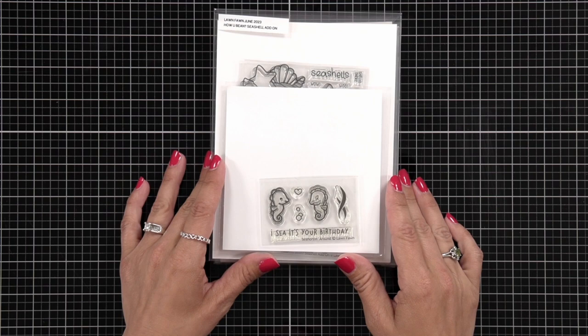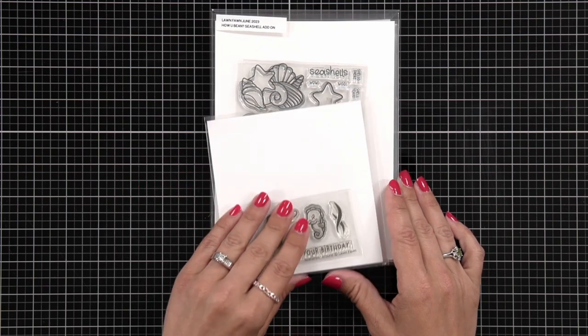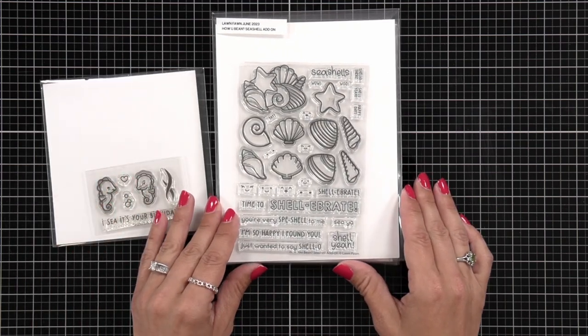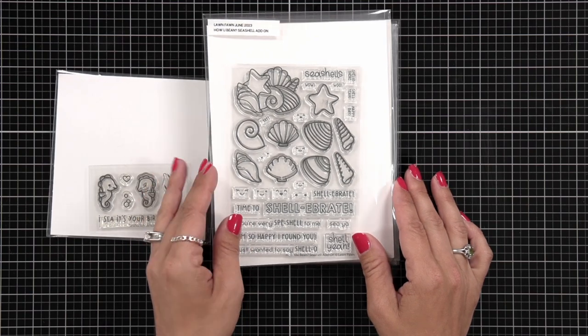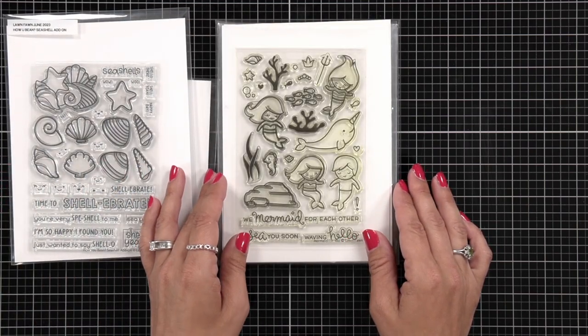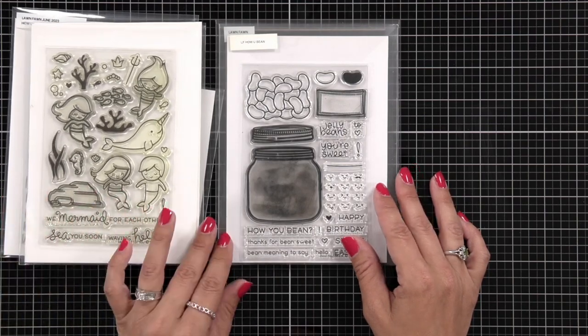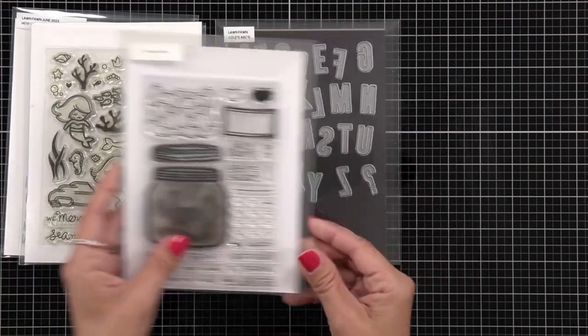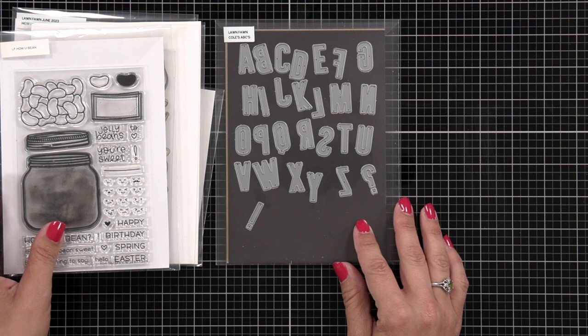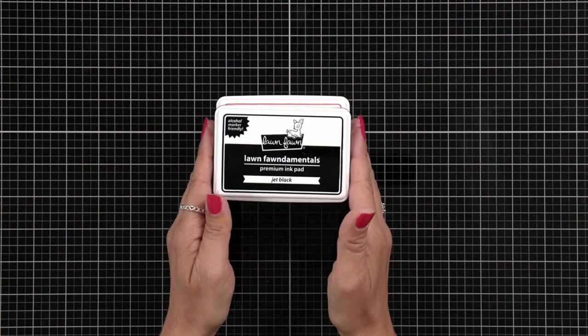First I want to show you the supplies I'm using today. I have the Seahorse and Around, How You Bean seashells, Mermaid for You. I also have the original How You Bean, I'm going to use that jar and the lid, and then I have Kohl's ABCs.